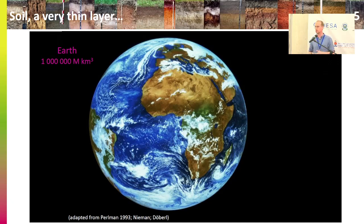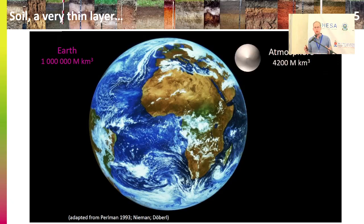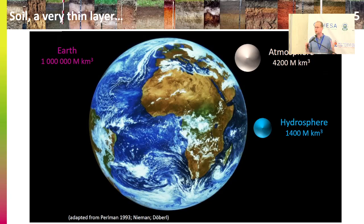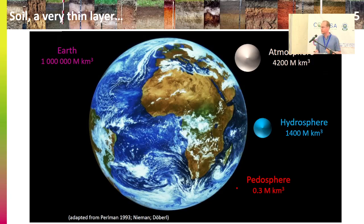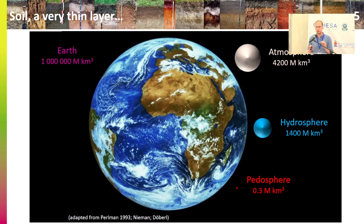If we look at a larger scale — this is the volume occupied by the Earth — if we could squeeze all the atmosphere into a bowl, this is the volume it would occupy. Same for all the water of the world: oceans, lakes, etc. But if you look at soils, this is the volume that all the soils of the world occupy. It's very, very small, spread across all the continents, making a very thin layer from a few centimeters to a few meters — almost like a skin, very fragile.